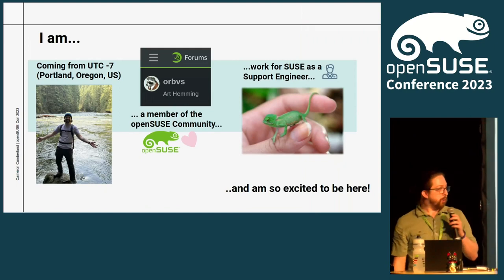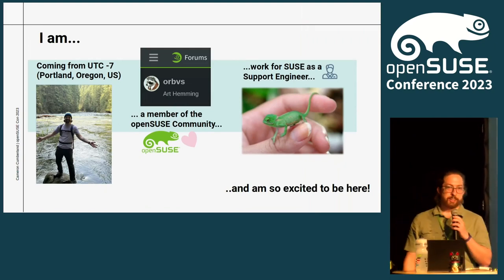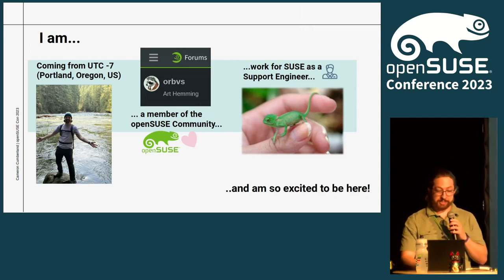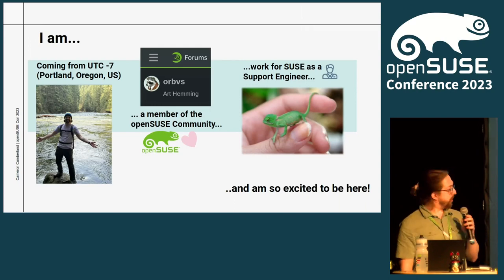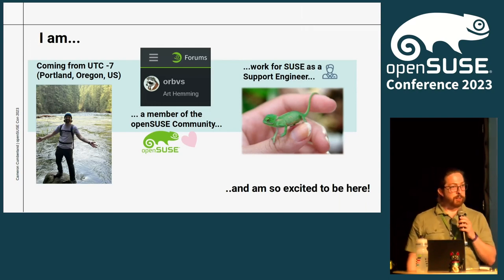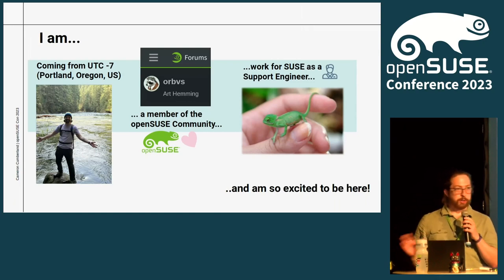My name is Cameron Cumberland and I'm an employee of SUSE. I'm coming from UTC-7, Portland, Oregon — hence the slurred words. I did not have one of the OpenSUSE beers, I'm just exhausted. I'm a member of the OpenSUSE community. I go by Orbis online, on Reddit also Orbis Terrace. I work for SUSE as a support engineer, so feel free to ask me all of your Linux questions — I do that for a living.